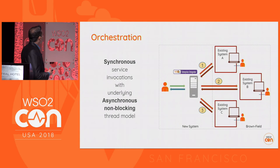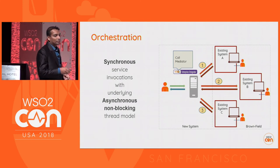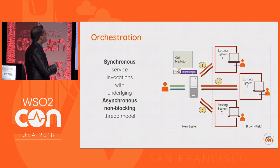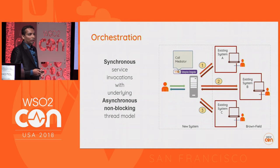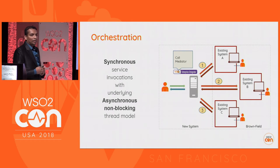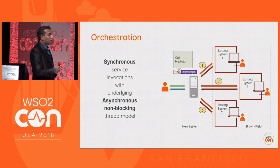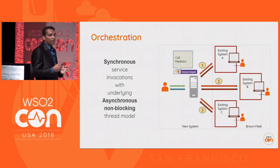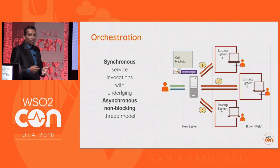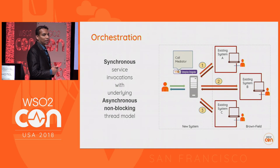For service orchestration, we have a mediator called the Call mediator. Using the Call mediator, we can sequentially invoke multiple systems. These invocations are synchronous, but the underlying engine uses an asynchronous and non-blocking transport implementation. Since it is non-blocking, the underlying threading mechanism doesn't wait for the response to arrive, meaning we can do more work with fewer resources.